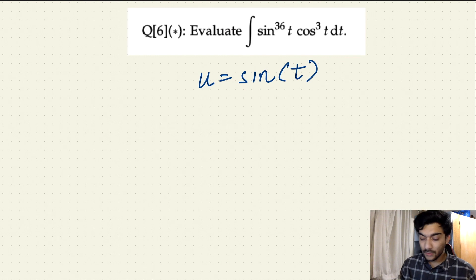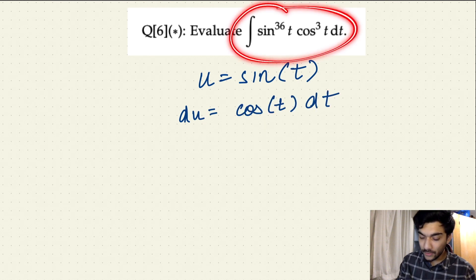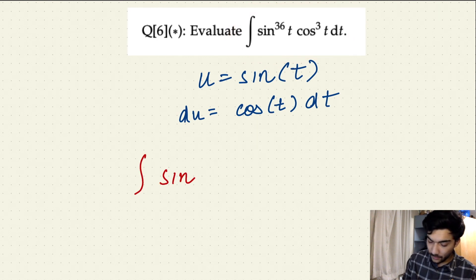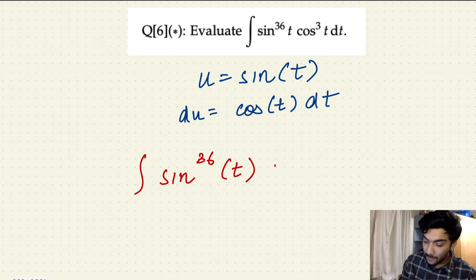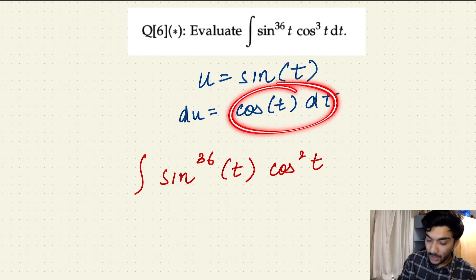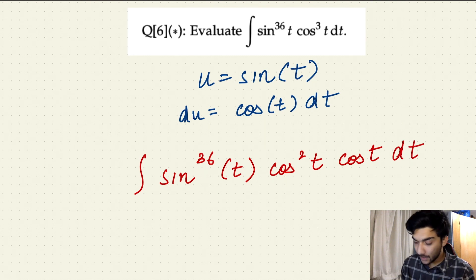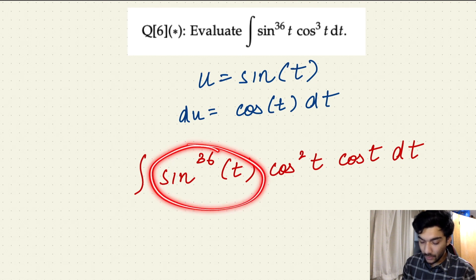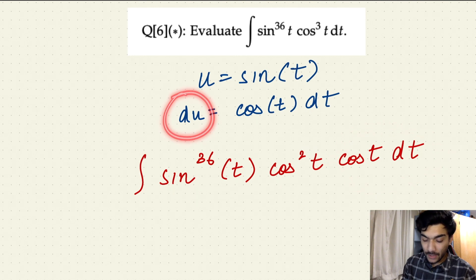You'll clearly notice why we picked sine t and not cosine t to simplify this expression using substitution. If we assume u equals sine t, then du equals cosine t dt. Now let's rewrite the integral: we split cosine cube t into cosine squared t times cosine t dt, giving us sine to the power 36t times cosine squared t times cosine t dt. Sine to the power 36t becomes u to the power 36, and cosine t dt becomes du.